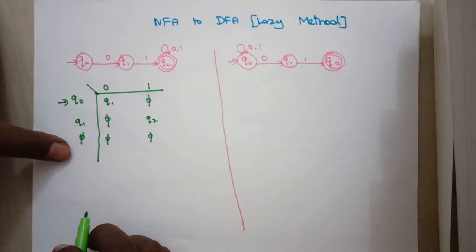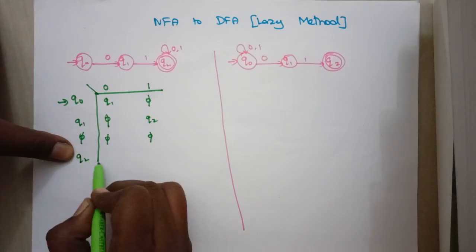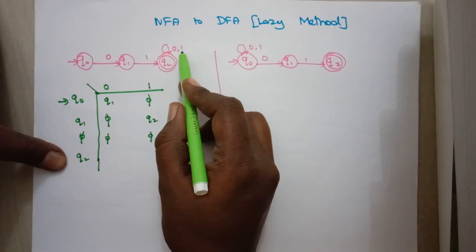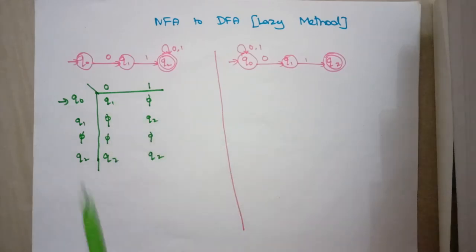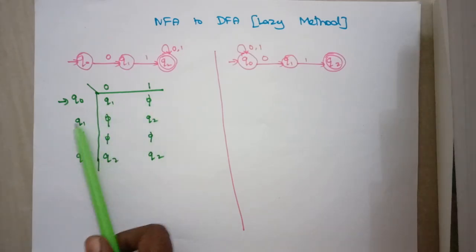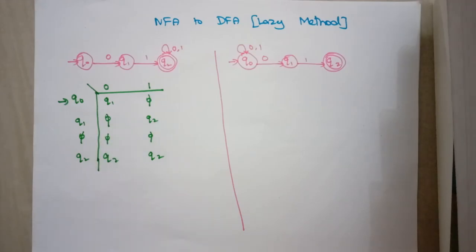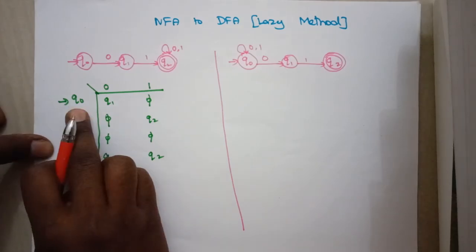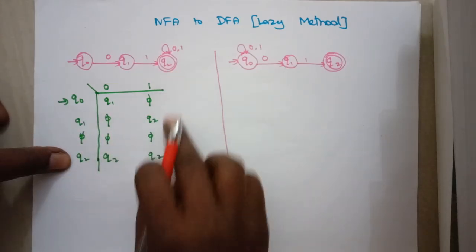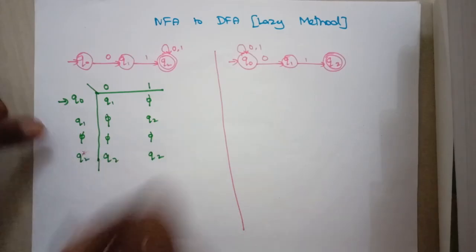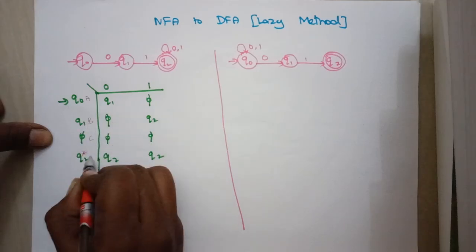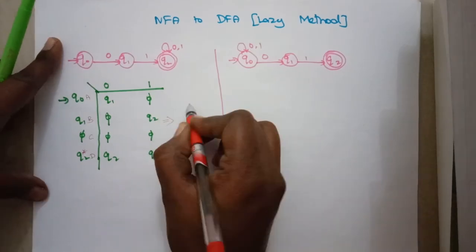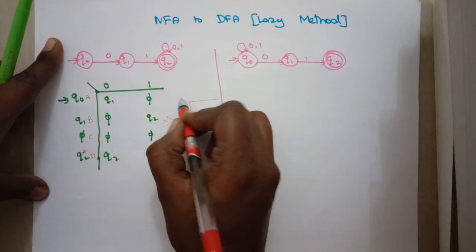For the null state, transitions on both 0 and 1 are null. Now we have a new state q2 — write its transitions. q2 on input 0 or 1 stays in q2 itself. The table is now complete: q0, q1, q2, and null all have transitions filled. Starting state is q0, final state is q2. Now rename the states — q0, q1, q2, and null become a, b, c, d respectively — and rewrite the table in terms of the new variables.